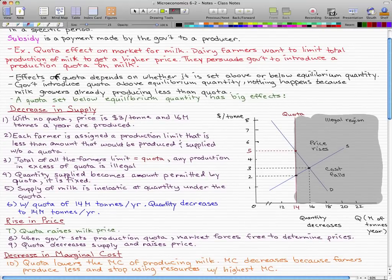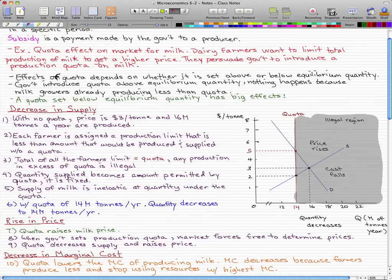So let's go through the decrease in supply first. We know that with no quota the price is three dollars per ton and 16 million tons a year are produced. Now each farmer is assigned a production limit that is less than the amount that would be produced and supplied without a quota.